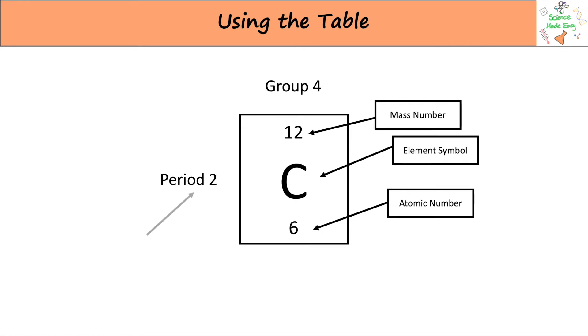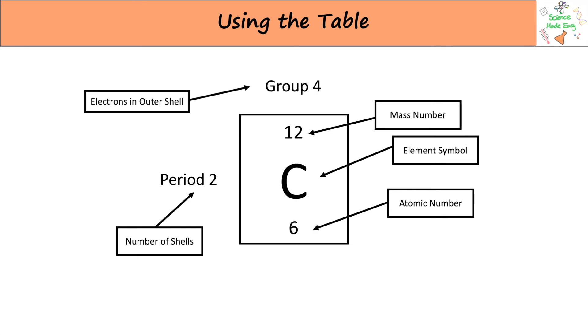The period the element is in can tell us the number of shells, and the group number tells us the number of electrons in the outer shell.